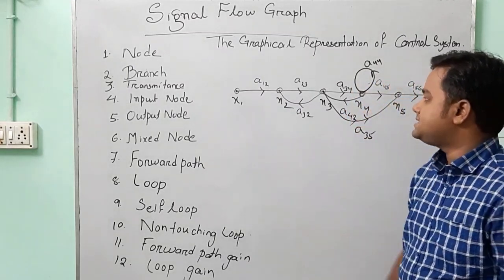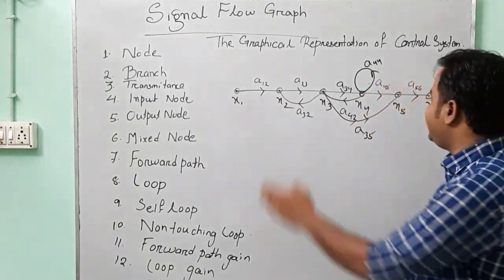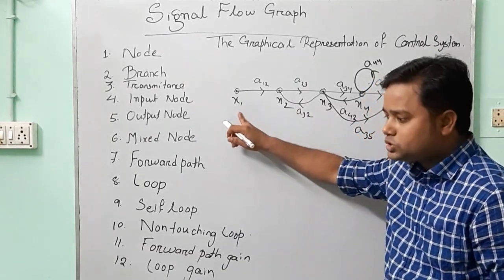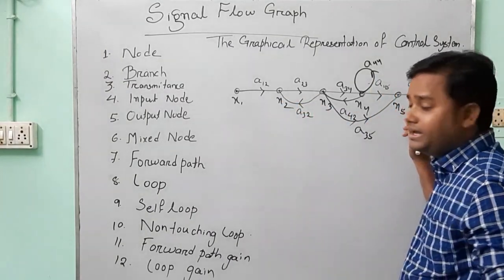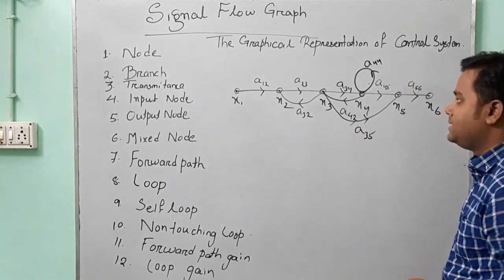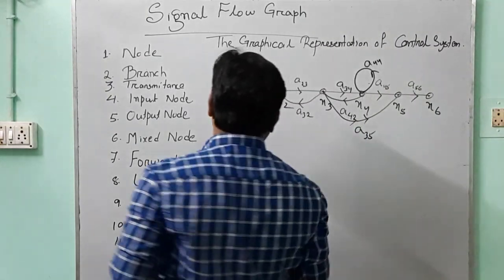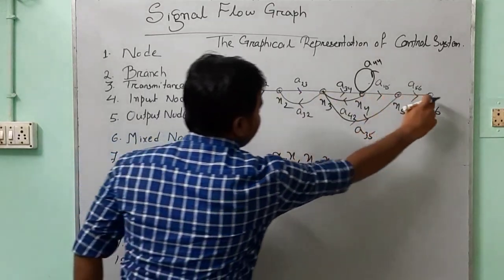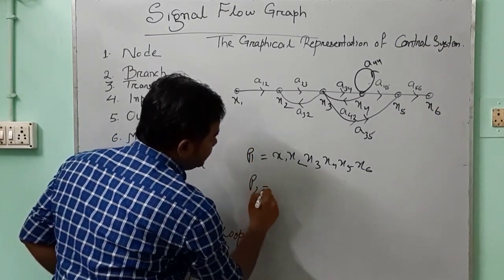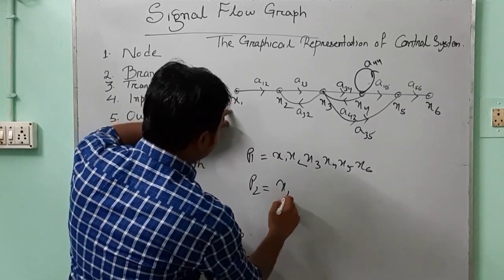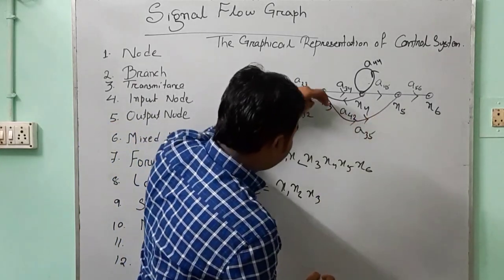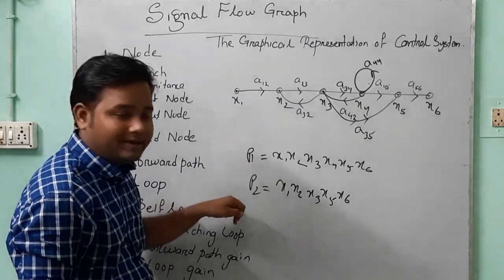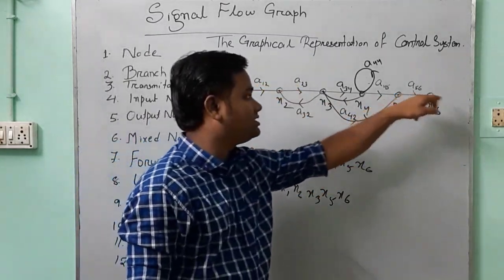Forward path means a path in which the signal passes from the input node and ends at the output node, but no node is traversed more than once. We have two forward paths here. Path P1 starts from X1, then X2, X3, X4, X5, and X6 — this straight line is the first forward path. Path P2 starts from X1, then X2, X3, then in another direction X5, then X6. So P1 is the straight-line path and P2 takes a different route.